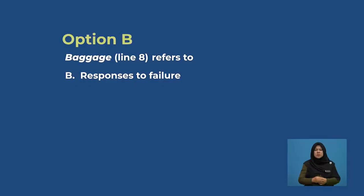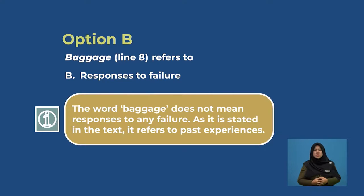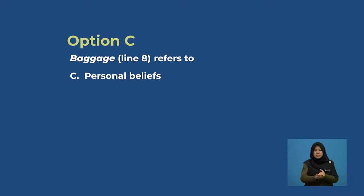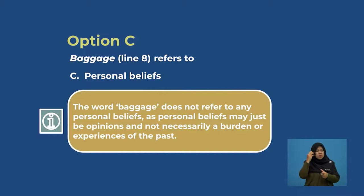Let's look at option B. 'Baggage' line eight refers to B, responses to failure. The word baggage does not mean responses to any failure, as it refers to past experiences. So option B is incorrect. Let's look at option C. 'Baggage' line eight refers to C, personal beliefs. The word baggage does not refer to any personal beliefs, as personal beliefs may just be opinions and not necessarily a burden or experiences of the past. Therefore, option C is the wrong answer.